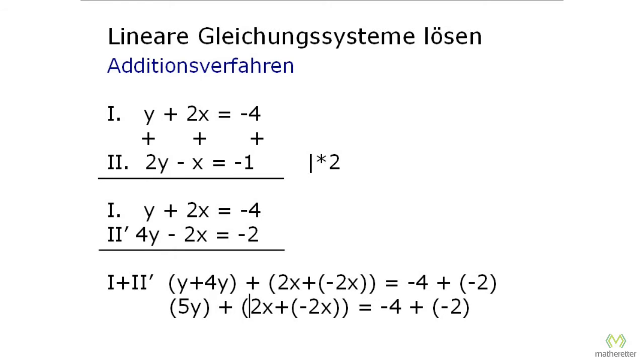y plus 4y is 5y, then 2x, here it says plus and minus, so we have just minus. And then we have 2x minus 2x, and that's just zero.